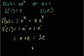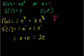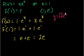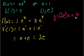So what is the equation of the tangent line? It's going to take the form y = mx + b — the slope-intercept form from algebra. The slope m is 2e, which we just found from the derivative at x = 1. So y = 2e·x + b. If we can figure out the y-intercept b, we are done.